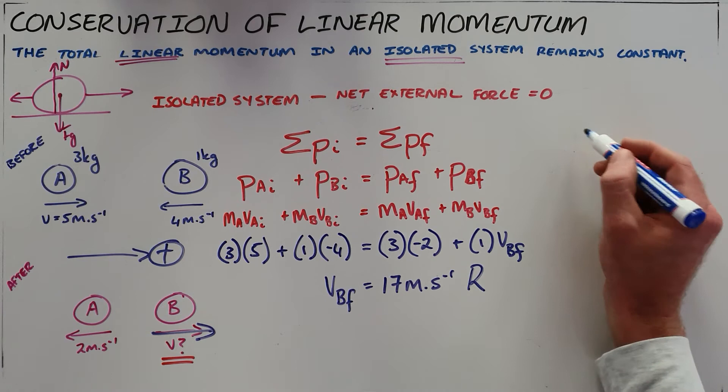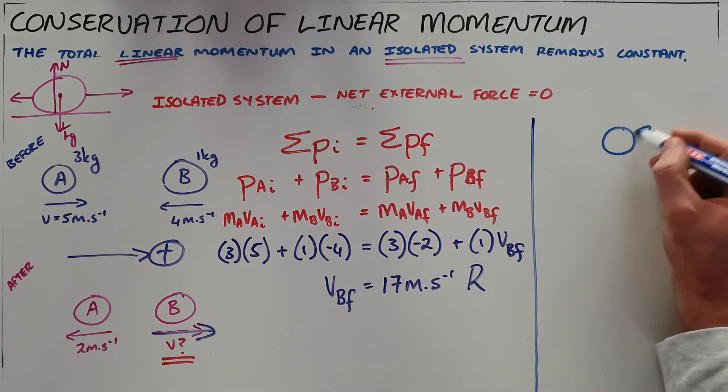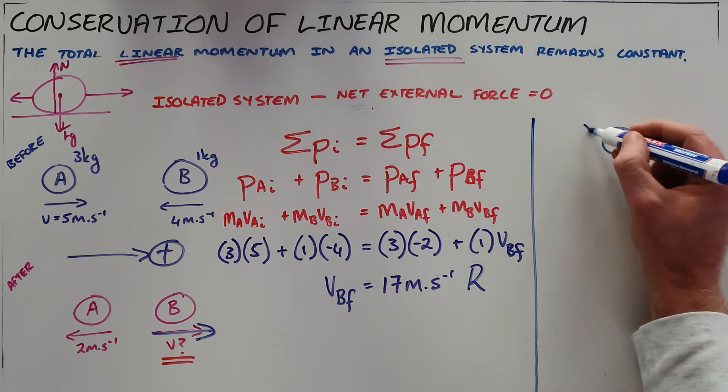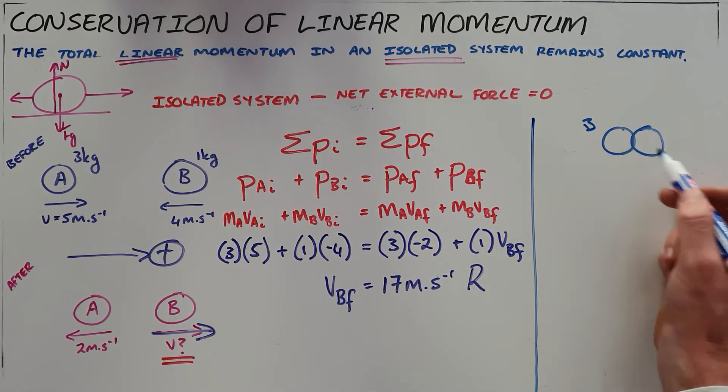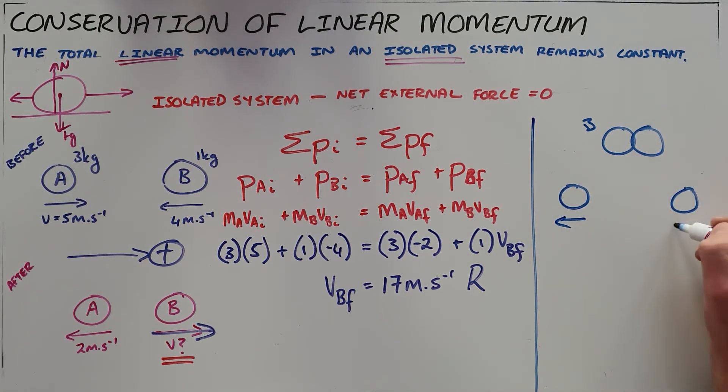It is also possible for there to be what's called an explosion. An explosion is when initially there are two objects that are combined, and then some force causes them to separate and move off in opposite directions.